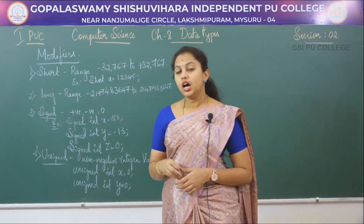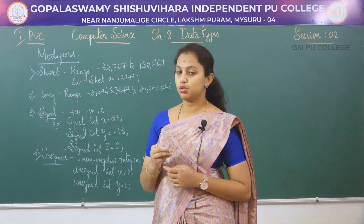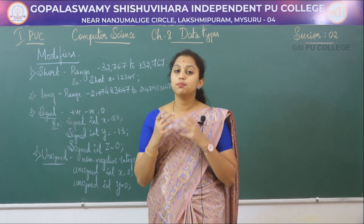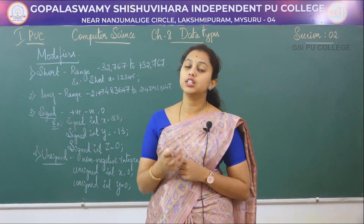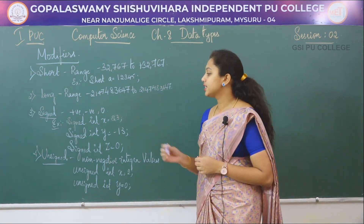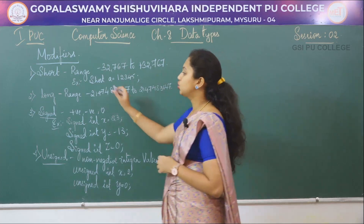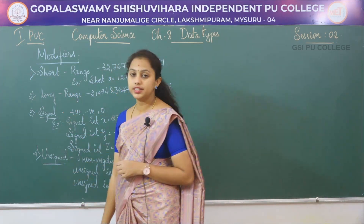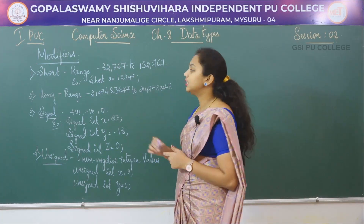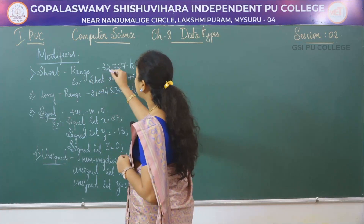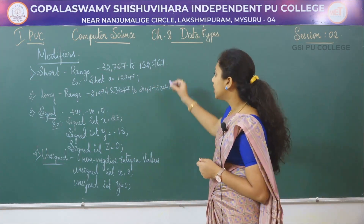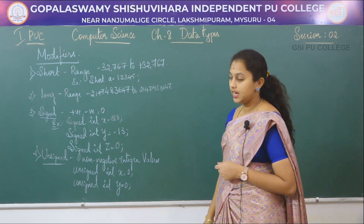A modifier is used to alter the meaning of the base type so that it more precisely fits the needs of various situations. In modifiers there are four types: short, long, signed, and unsigned integers. We can use short for small integers; it ranges from -32767 to +32767.